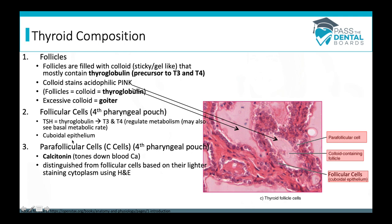The follicular cells are the workhorse of the thyroid — this is where thyroid hormones T3 and T4 are manufactured. These cuboidal epithelial cells line the follicle. When triggered by TSH (thyroid stimulating hormone, made in the anterior pituitary), they reach into the follicle, grab thyroglobulin, and convert it into T3 and T4. The main job of thyroid hormones is to regulate metabolism, also called the basal metabolic rate.